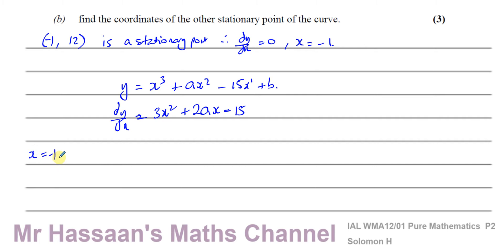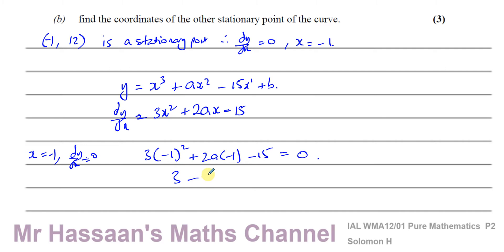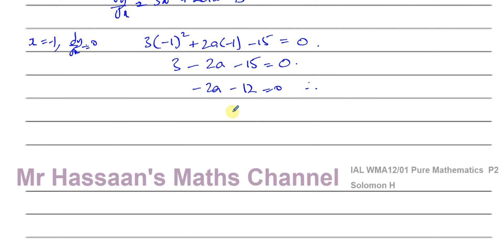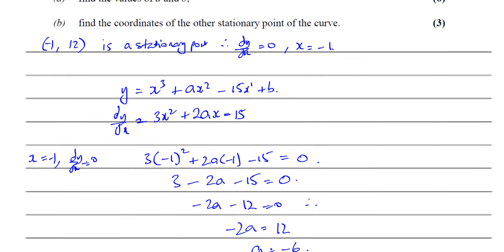We know that dy/dx equals 0 when x equals minus 1. So when x equals minus 1, dy/dx must be 0. Let's put in minus 1 instead of x: 3 times minus 1 squared, plus 2a times minus 1, minus 15 equals 0. That gives 3 minus 2a minus 15 equals 0, so minus 2a minus 12 equals 0, therefore minus 2a equals 12, so a is equal to negative 6.